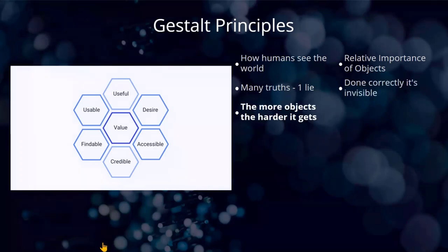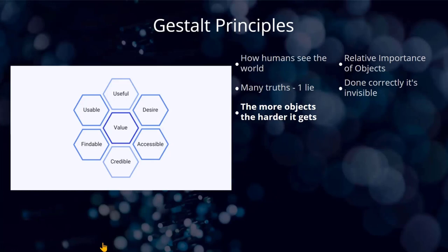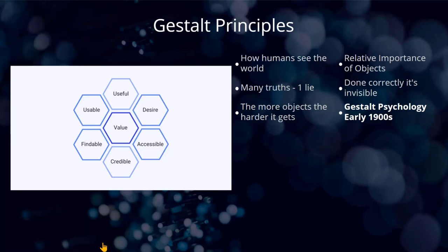The other thing that's true about Gestalt principles is that the more objects you put on the screen, the harder it gets to decide which object is more important than another or how objects relate to each other. Perhaps they are just objects on a 2D frame when we make them. So Gestalt psychology came from the early 1900s, and now we're going to go on to what the Gestalt principles actually are.